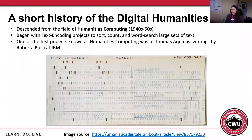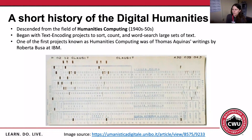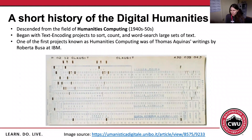A little history about the digital humanities. It was descended from the field of humanities computing, which started in the 1940s and 50s. This began with text encoding projects that sorted, counted, and facilitated word search of large corpuses of text. One of the first projects known as humanities computing was of Thomas Aquinas' writings, by Robert Busa at IBM.